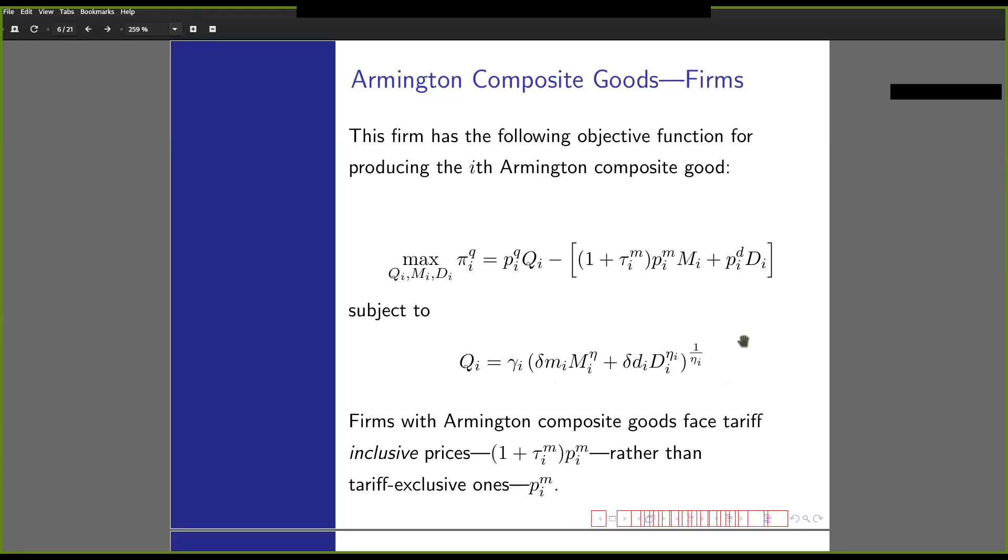A profit maximizing firm has to maximize this profit function as its objective function, subject to this production function as the constraint. Note that a firm which produces Armington composite goods face tariff-inclusive prices, meaning that aside from the price of imports, it also has to include a tariff for every imported good purchased, rather than just tariff-exclusive ones.